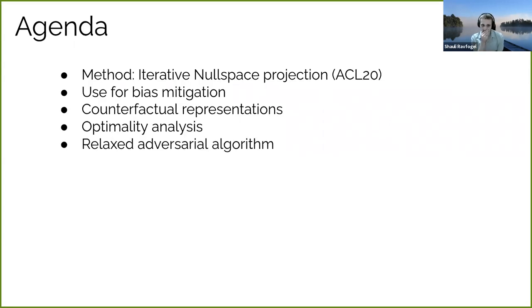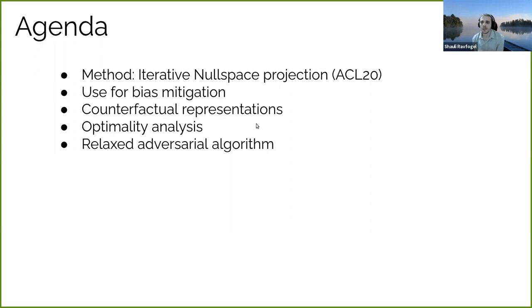Please feel free to ask questions and interject at any moment. This is the agenda. I will first describe a method we proposed in ACL 2020 called Iterative Nullspace Projection, or INLP, which is a method to remove specific information from neural representations. I'll focus on its use to mitigate bias — for example, gender bias — and briefly mention other use cases such as generating counterfactual representations. In the second part of the talk, I'll discuss ongoing work studying the optimality of this method and improvements over it.